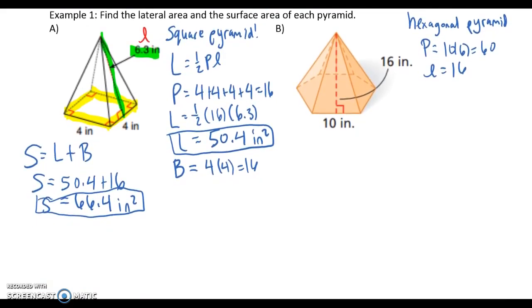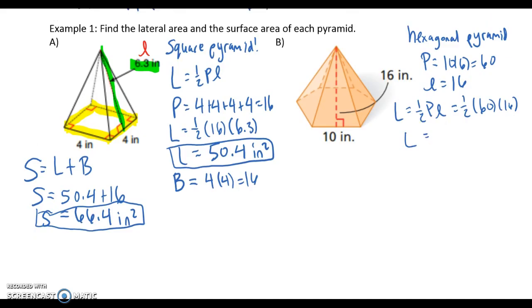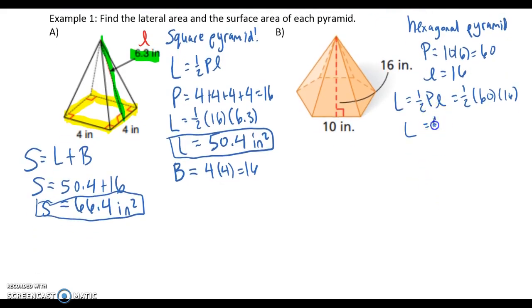Starting off with lateral area. 1/2 perimeter times slant height. Already got everything I need. Plug it in. So I should get lateral area is equal to 480 square inches.